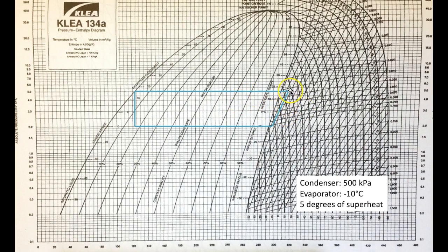As a final step, extend the condenser line out until it meets the compressor line, and that's all there is to it. We now have our compressor, condenser, expansion valve, and evaporator — the four main parts of the single-stage refrigeration system. With a correct diagram, we can look up enthalpy values using the x-axis and solve whatever equations we need for single-stage refrigeration.